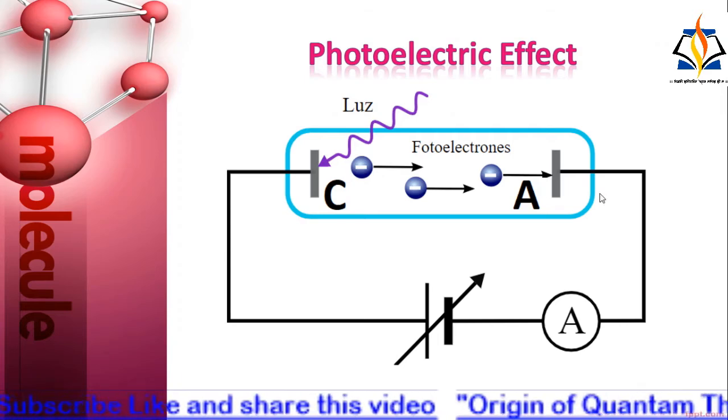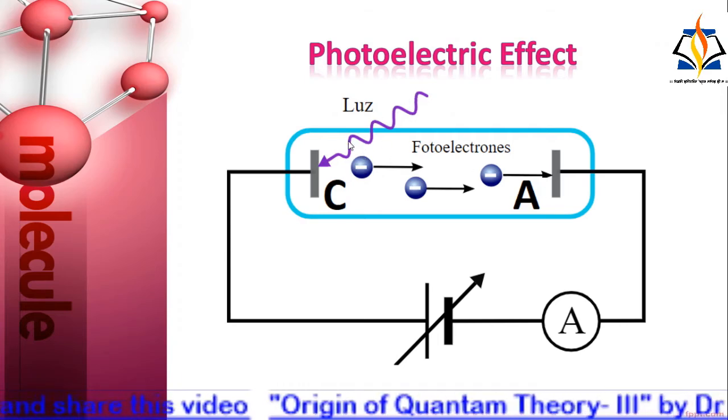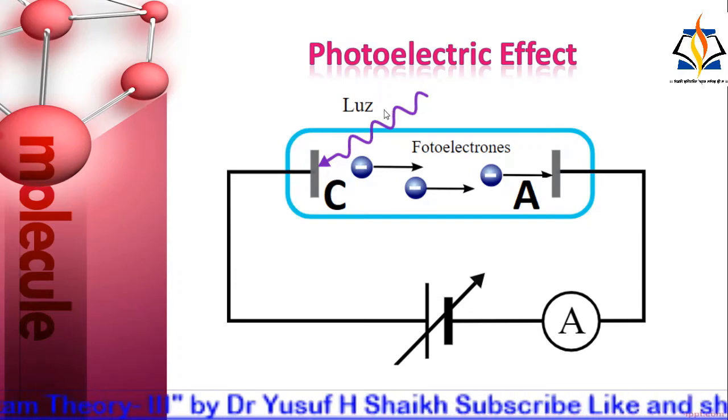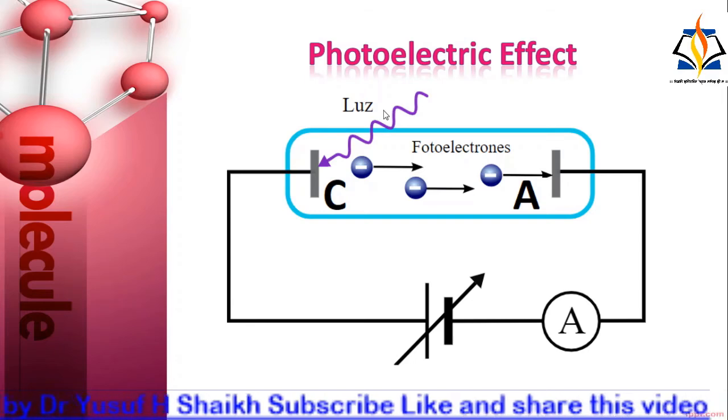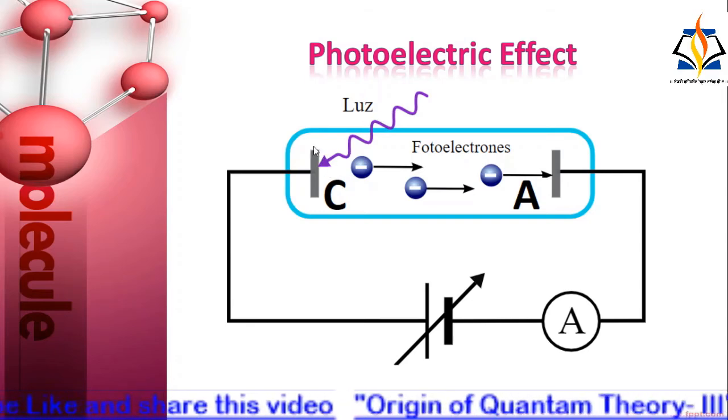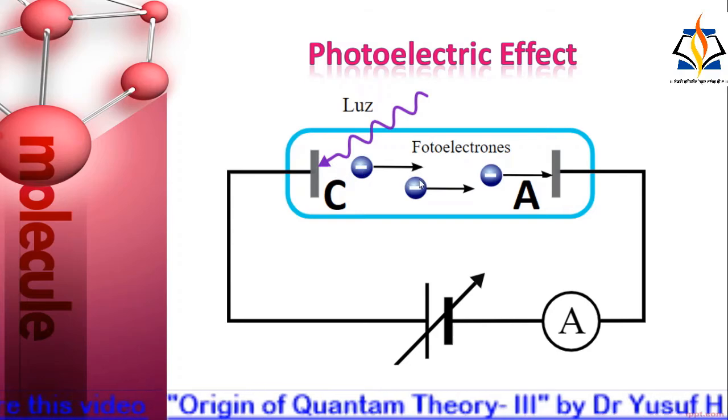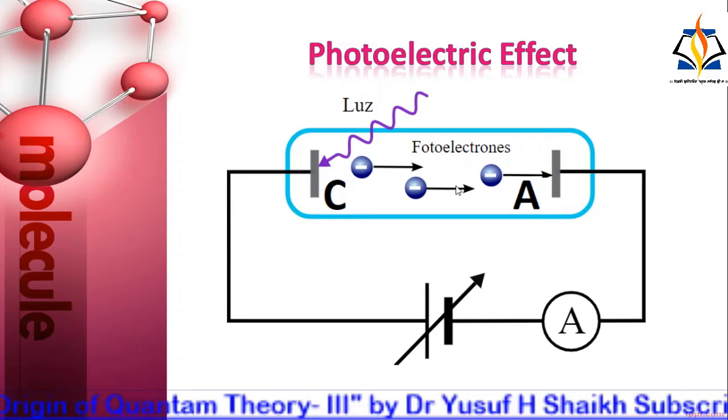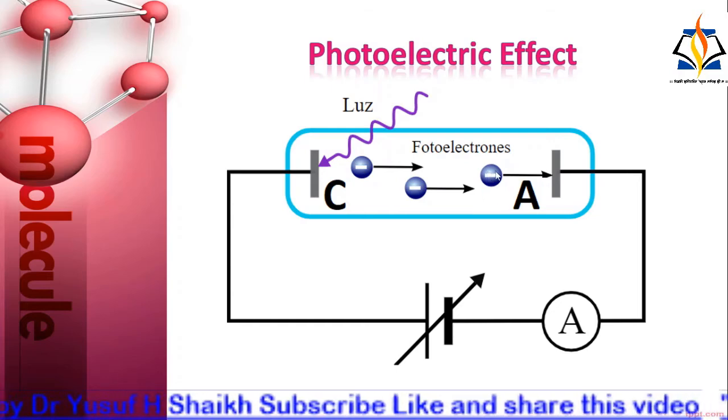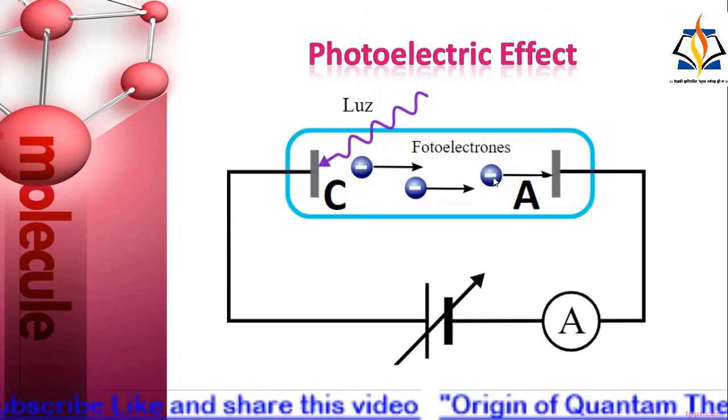Photoelectric effect: When electromagnetic radiation of sufficiently high frequency such as ultraviolet light or x-rays is incident on a metal surface, electrons are emitted. This phenomena is known as photoelectric effect and the emitted electrons are called photoelectrons.